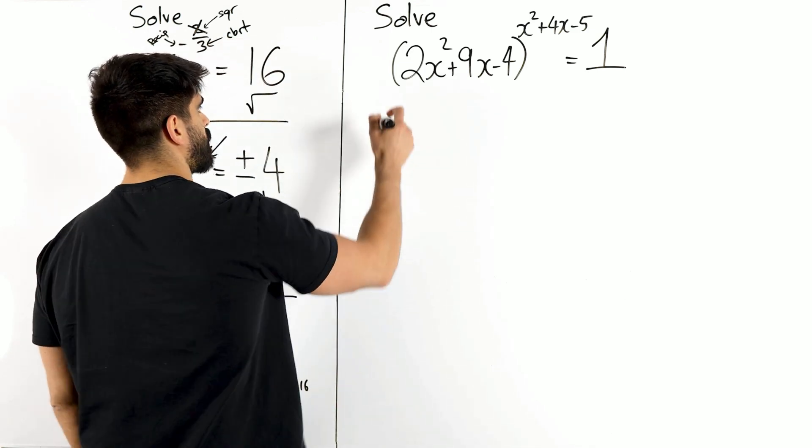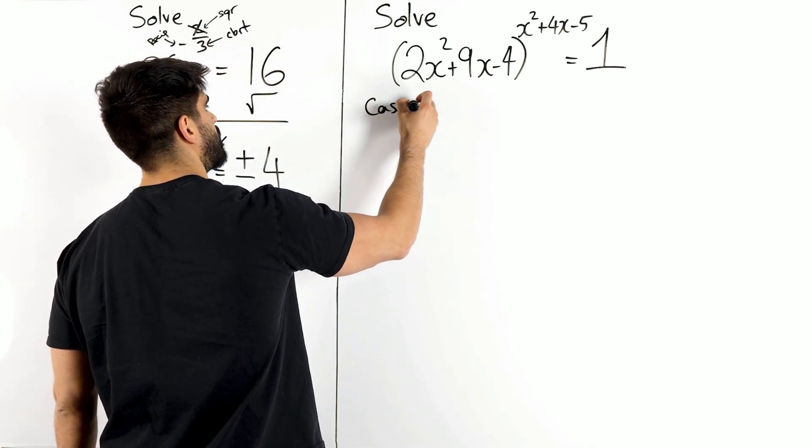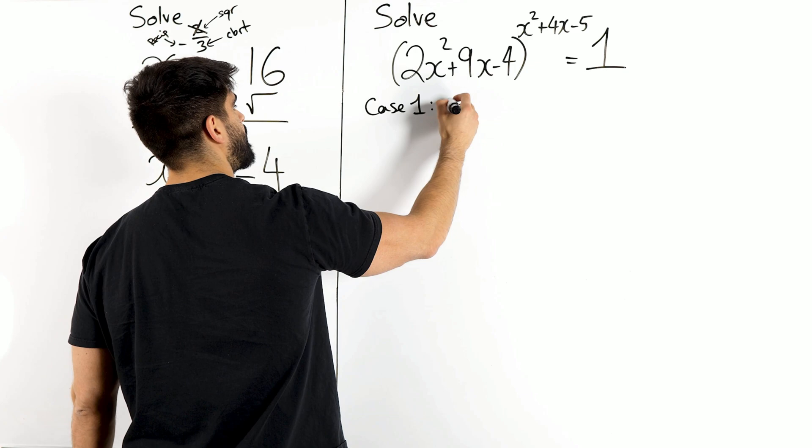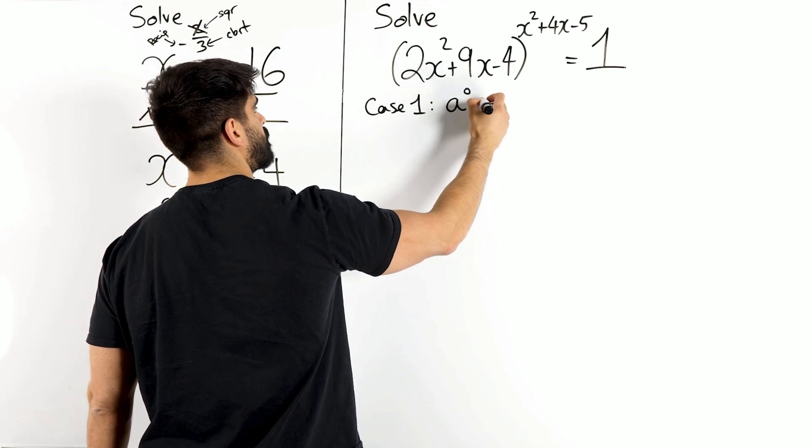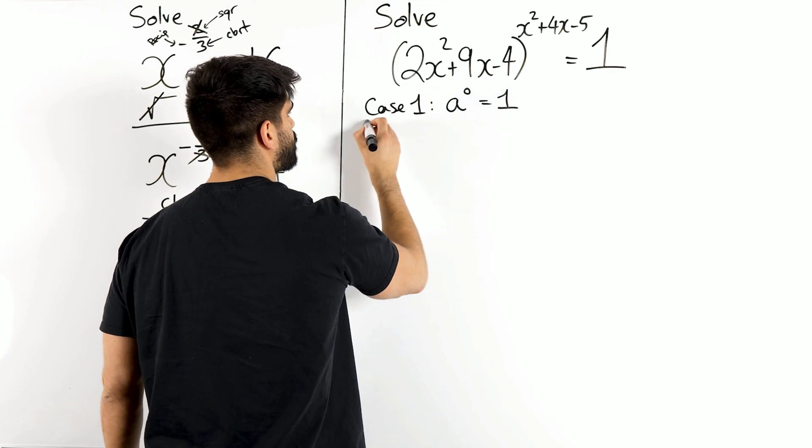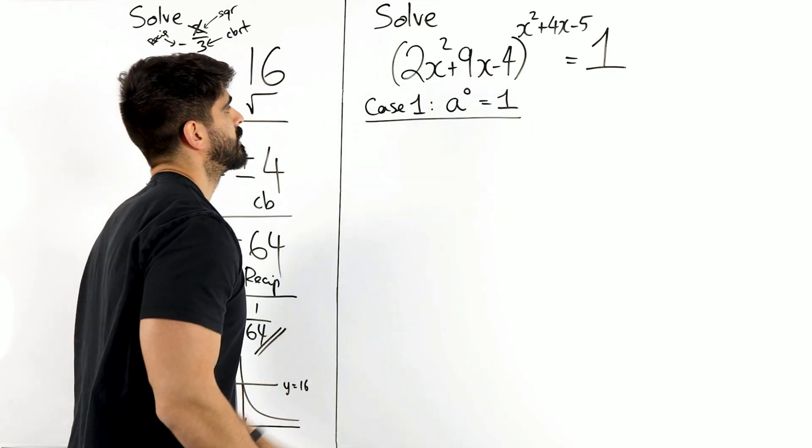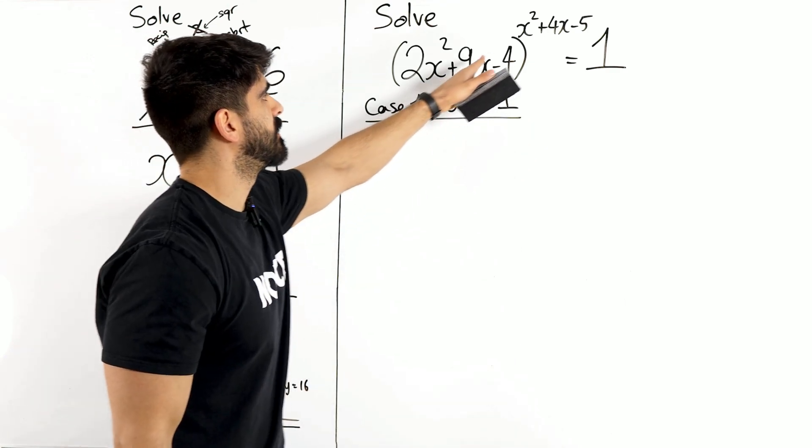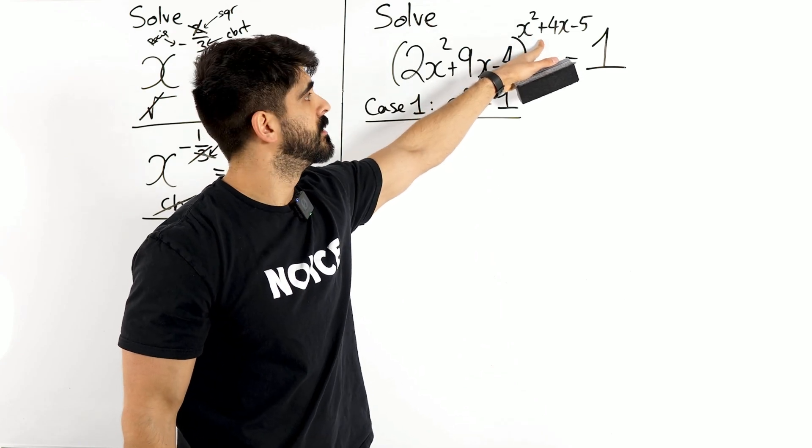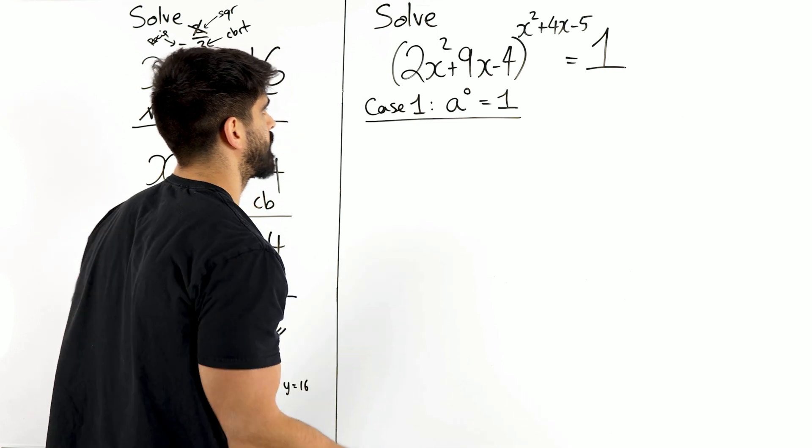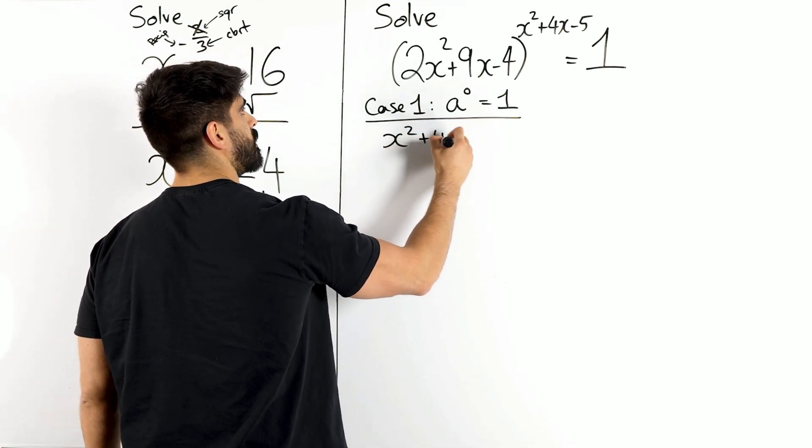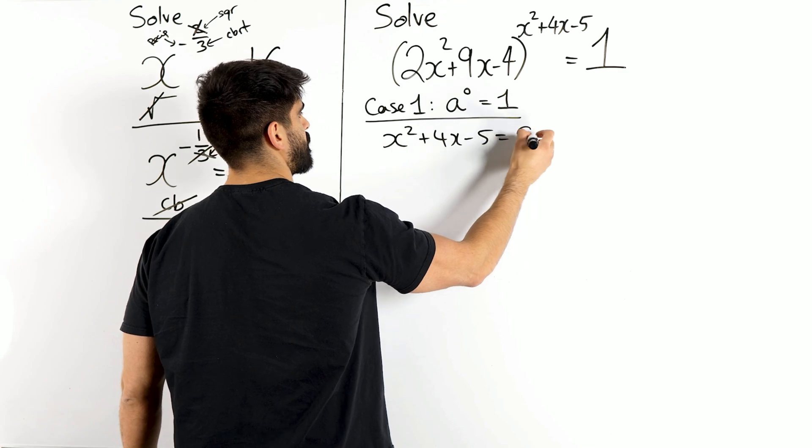Well, the first one I know, case one, is anything to the power of zero is one. Doesn't matter what this is, if that power is zero, then I will always get one. So my first case is setting that power to be zero.